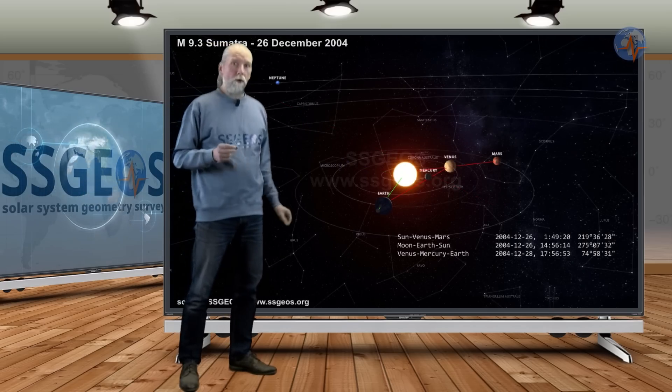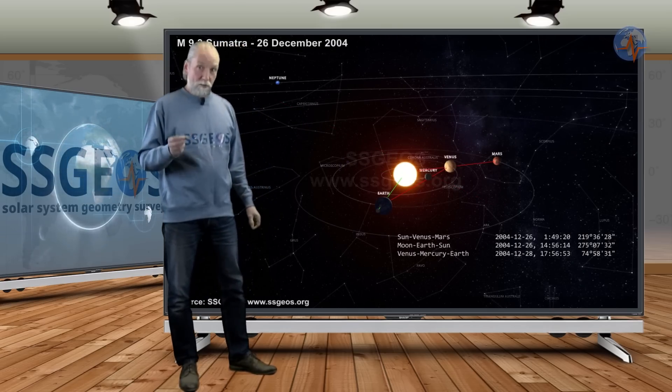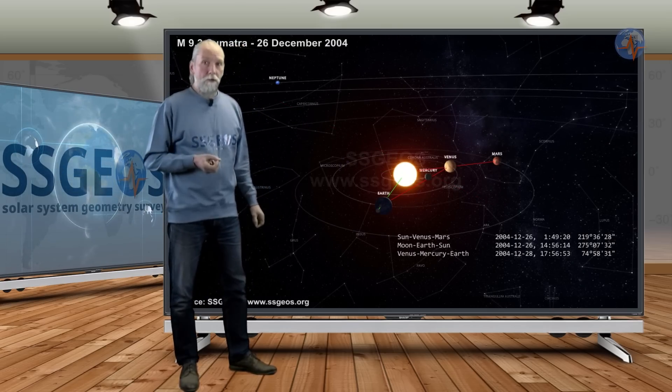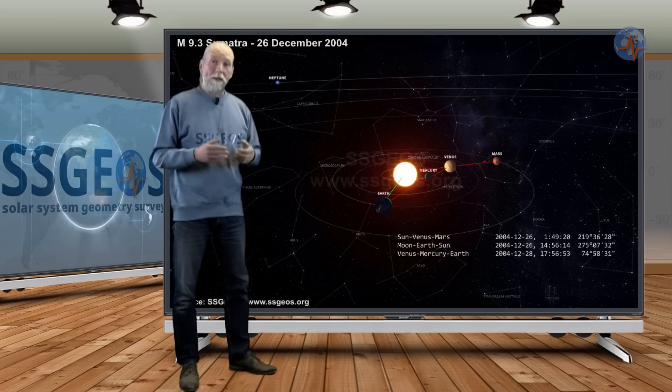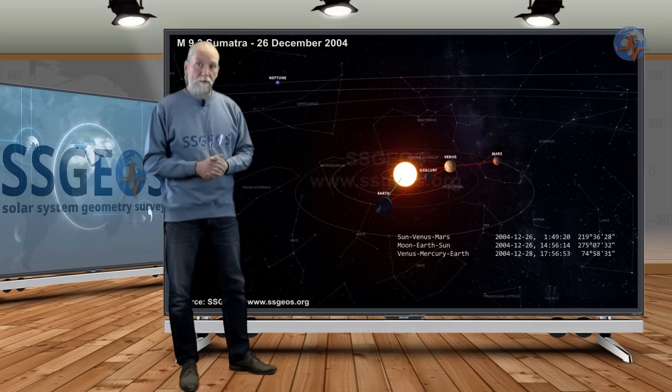In 2004, also a magnitude 9 earthquake at Sumatra at the time of full moon, but at the same time Earth was in a near conjunction with Mercury and Venus, while at the same time Venus was in a conjunction with the Sun and Mars.